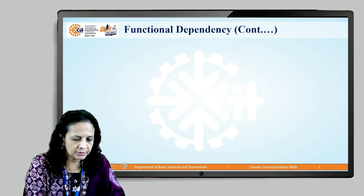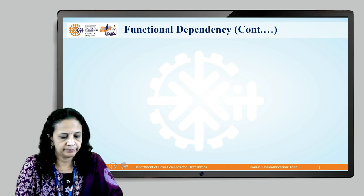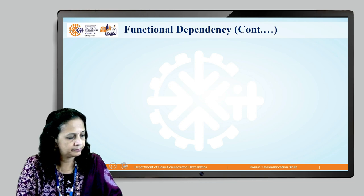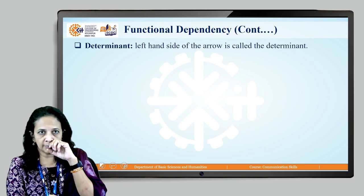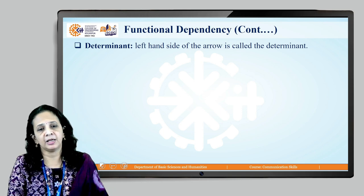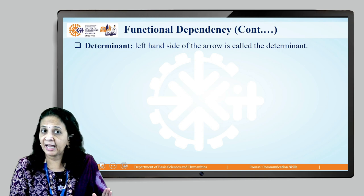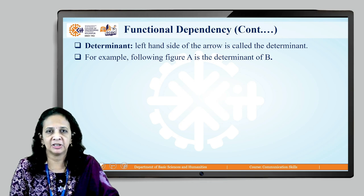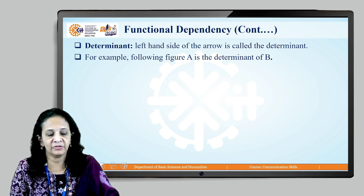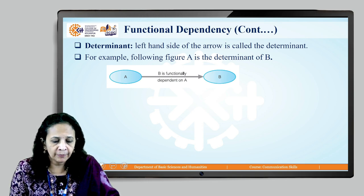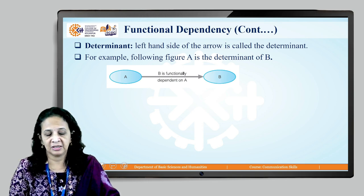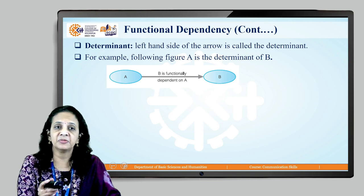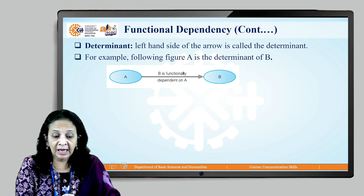These are some examples of functional dependencies. When we write a functional dependency as alpha → beta, alpha is the left-hand side (LHS) and beta is the right-hand side (RHS). The left-hand side is known as the determinant of the functional dependency.